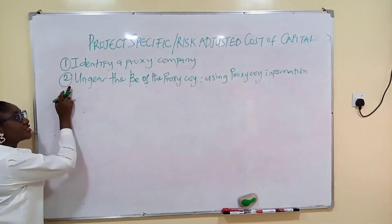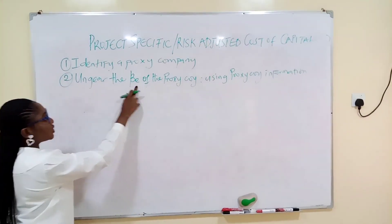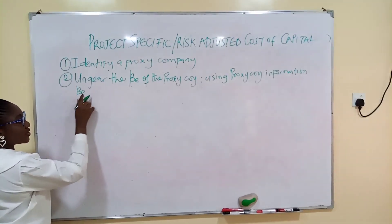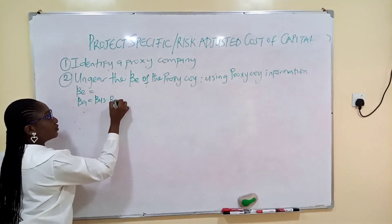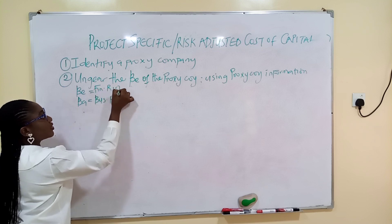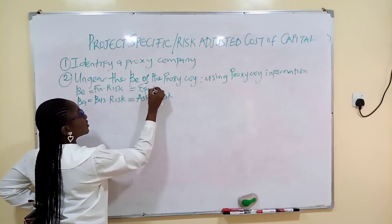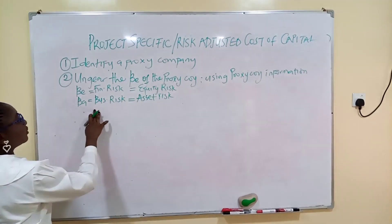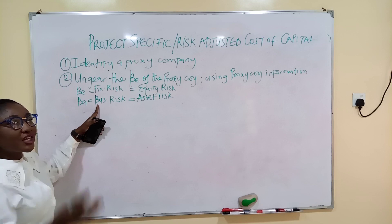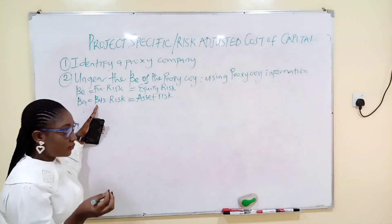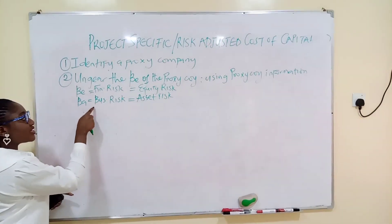Let me explain this concept. Why are you ungearing the beta equity of your proxy company? Beta equity represents finance risk, while beta assets represents business risk. Beta assets is also called asset risk; beta equity is also called equity risk. What you are actually looking for is the risk associated with the business that the company wants to go into — for example, the sandal business.